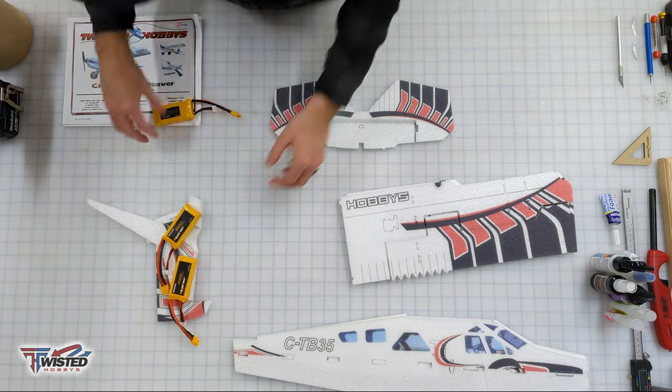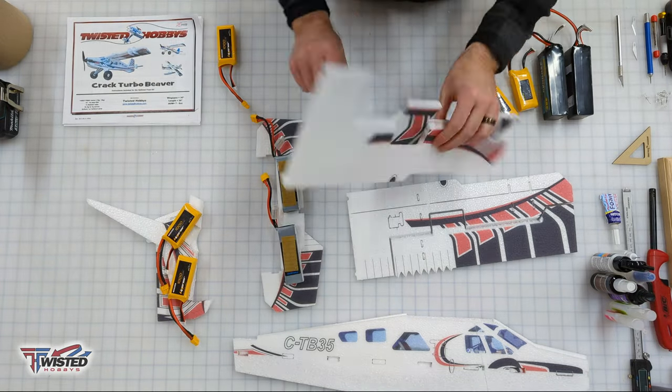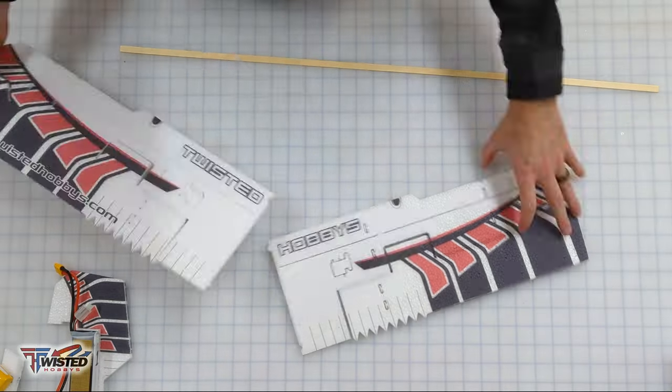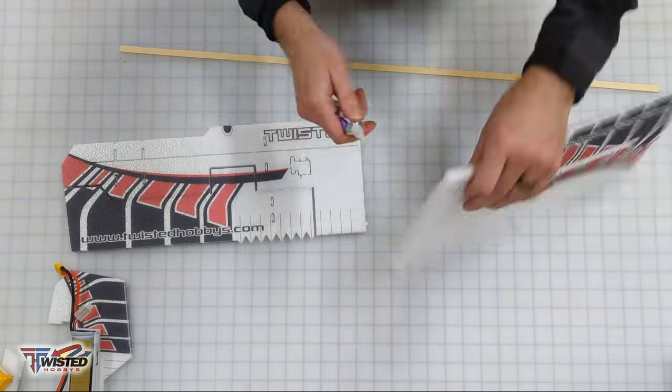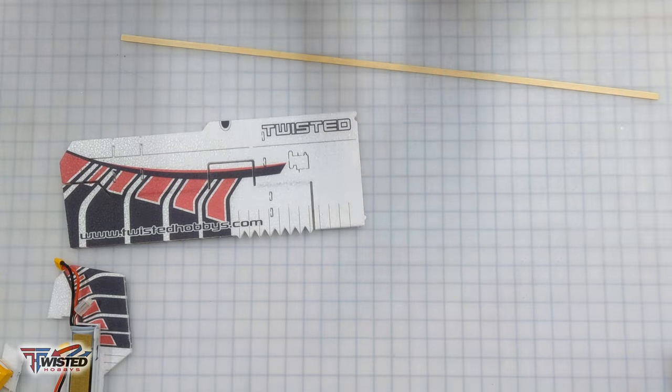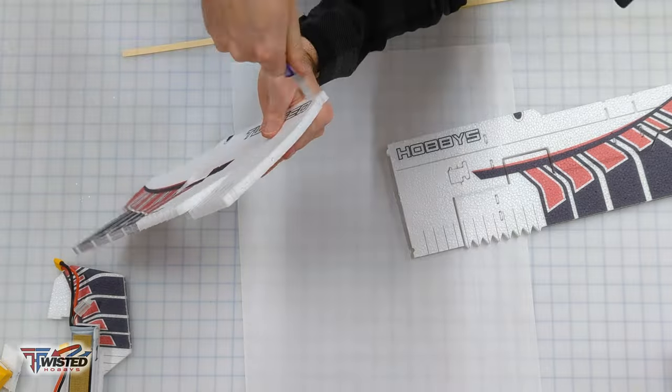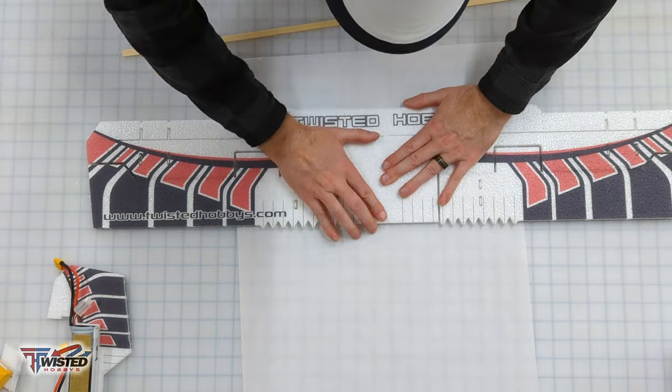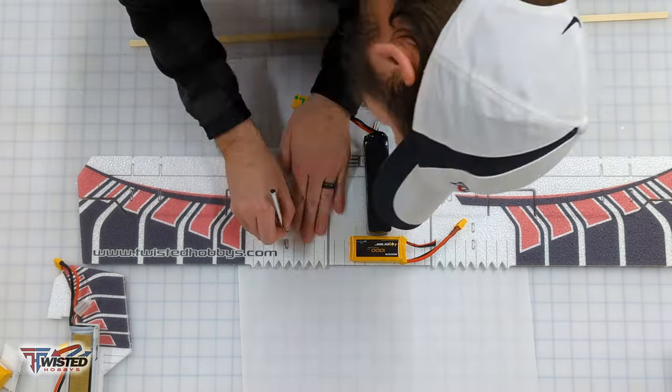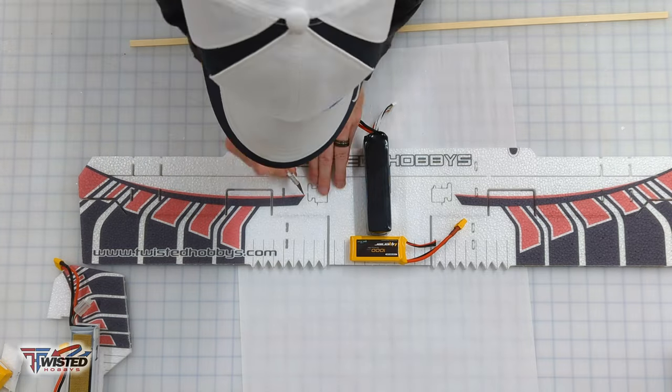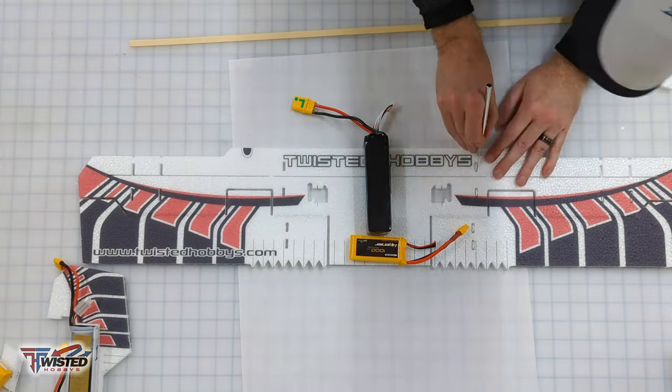First thing we need to do is fold over all of our surfaces - folding over the ailerons on the wings, folding over the rudder, and the elevator. Once I've done that for about an hour then I'm gonna glue these pieces together. I put the glue on using foam tack glue and then I squeeze it together, pull it apart and let it sit for a minute or so, and then when you squeeze it back together it tacks up really fast.